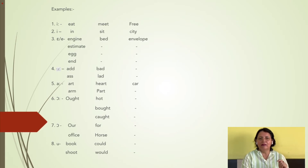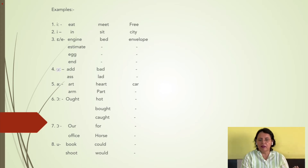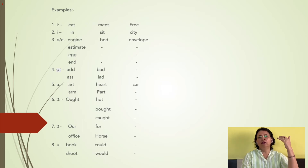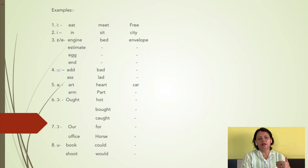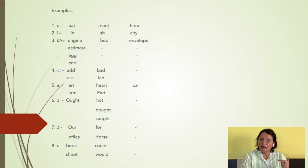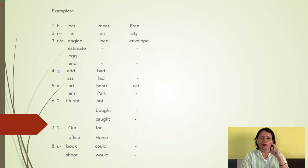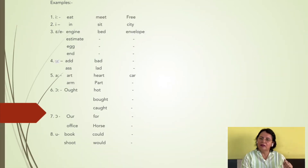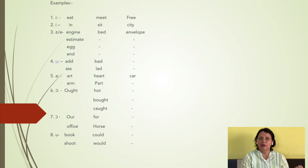Coming to the third vowel, that is /e/, as in 'egg'. You have it in 'engine', 'egg', 'bed', and 'envelope'. This stands midway between half-open and half-close, and at the same time it is a front vowel — articulated by the front part of the tongue. You also find that this is unrounded; again, the lips are spread. You have /e/ in words like 'engine', 'estimate', 'egg', 'end', and words like 'bet'. This is comparatively a difficult sound for Indian English speakers.